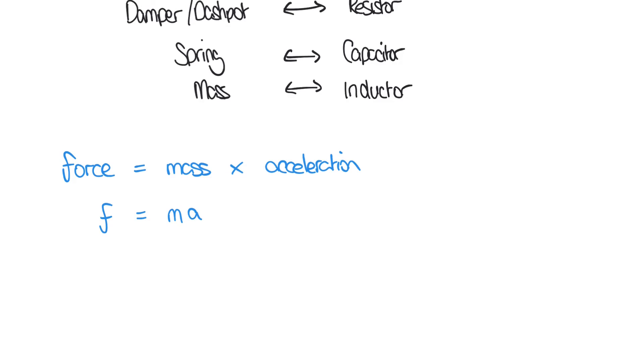So recall that the acceleration is the derivative of velocity. Acceleration is the rate of change of velocity. So instead, we could say that F equals m dv by dt.